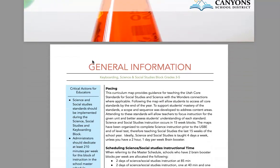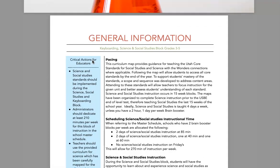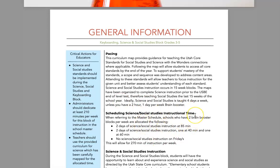We have some general information about how to utilize your content integration block for social studies and science instruction. For scheduling, the master schedule states that you should have two days of science and social studies instruction at 85 minutes per day, and two days with a 40-minute and a 60-minute block per day. This allows for 270 minutes of instruction per week for science and social studies — and I want you to notice that this has changed since last year.